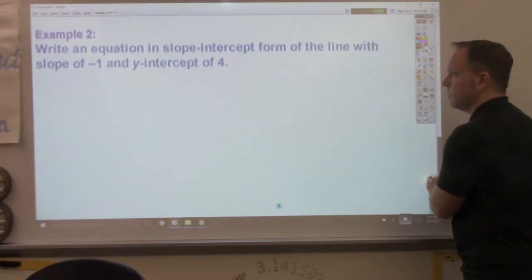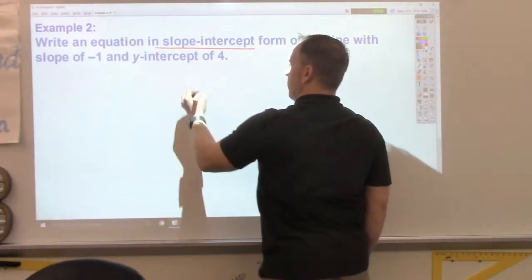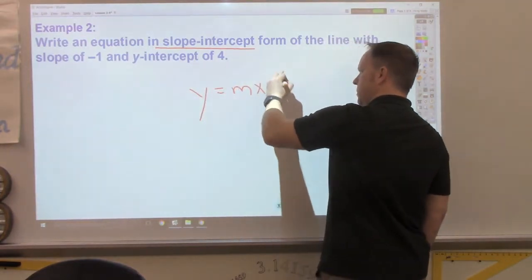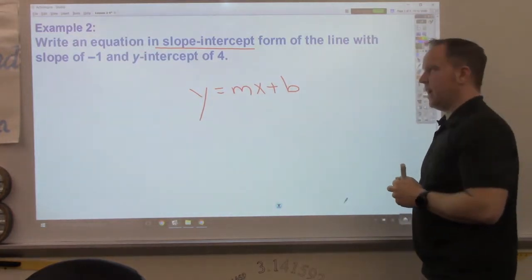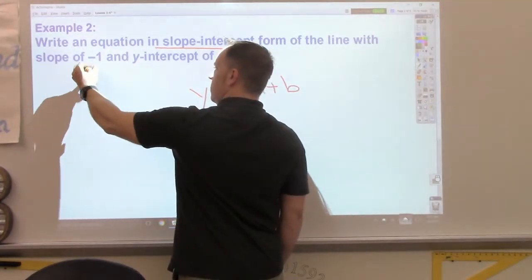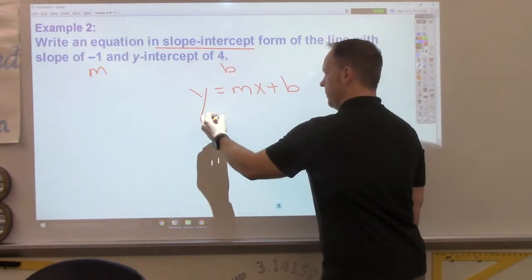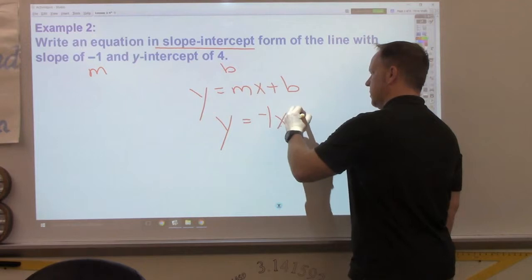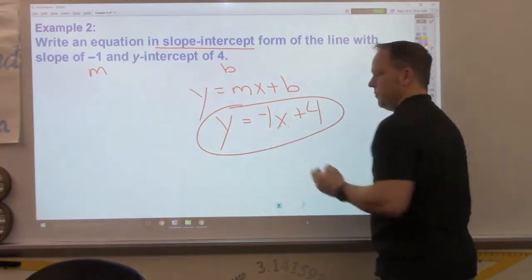Example 2, write the equation, again, in slope-intercept form of the equation of a line, a slope of negative 1 and a y-intercept of 4. So my slope is now negative 1, my y-intercept is now 4. y equals negative 1x plus 4. Finished.